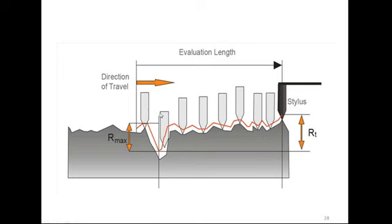When we move the stylus on the surface, when there is a peak, the stylus goes up; when there is a valley, it goes down — repeatedly going up and down along the surface profile. Based on the nature of the surface, this stylus movement allows us to draw a curve or graph, and on the basis of this graph we judge the roughness value of our surface.